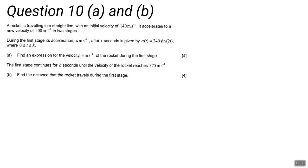We're given the expression for the acceleration. To find the velocity, we need to use the fact that the velocity is the integral of the acceleration. So we need to integrate the acceleration, which is 240 sin(2t), with respect to t.